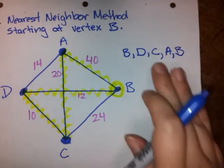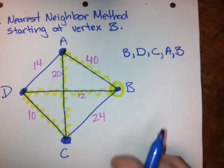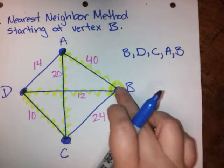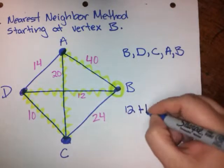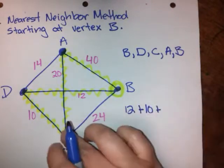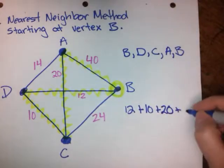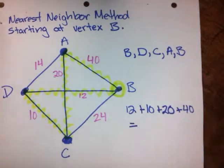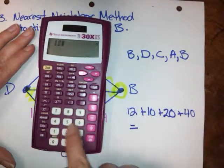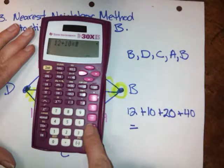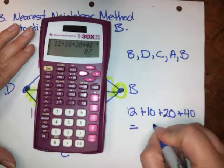So that is the actual circuit from the nearest neighbor method, but they also want us to give the value of that. So that's going to be B to D is 12 plus D to C is 10 plus C to A is 20 plus A to B is 40. And when we add that up in our calculators, we've done it before, but we'll go ahead and do it again.